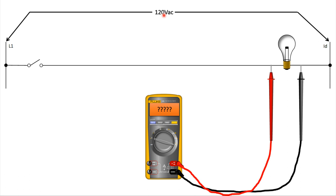We move our meter leads to our load — the light bulb. We know we had 120 volts across the switch when it was open. Going back to the voltage divider principle: the open switch has near-infinite impedance, and the light bulb has maybe 8 ohms. Comparing 8 ohms to infinite ohms, we expect to see almost zero volts across the light bulb. The red lead is connected to a terminal that isn't connected to anything — effectively like waving it in the air — so there's no potential across the load.